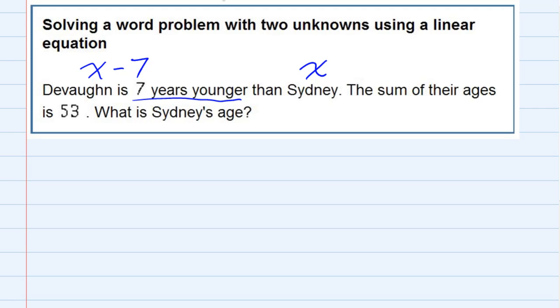If we continue to the next sentence, we're told the sum of their ages is 53. So if I take Devon's age, which is x minus 7, and I add, because it's the sum, I add Sydney's age, which is x, the result has to be 53.